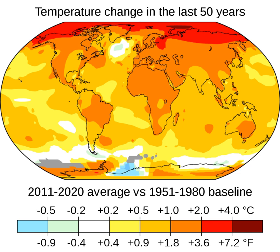CO2 emissions primarily come from burning fossil fuels to provide energy for transport, manufacturing, heating, and electricity. Additional CO2 emissions come from deforestation and industrial processes, which include the CO2 released by the chemical reactions for making cement, steel, aluminium, and fertiliser. Methane emissions come from livestock, manure, rice cultivation, landfills, wastewater, coal mining, as well as oil and gas extraction. Nitrous oxide emissions largely come from the microbial decomposition of inorganic and organic fertiliser.